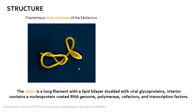The Zaire Ebola virus is a long, filamentous enveloped virus, about 80 nanometers in diameter and about 1 micrometer in length. However, during budding, several nucleocapsids can acquire one envelope to give a budding length of up to 14 micrometers.